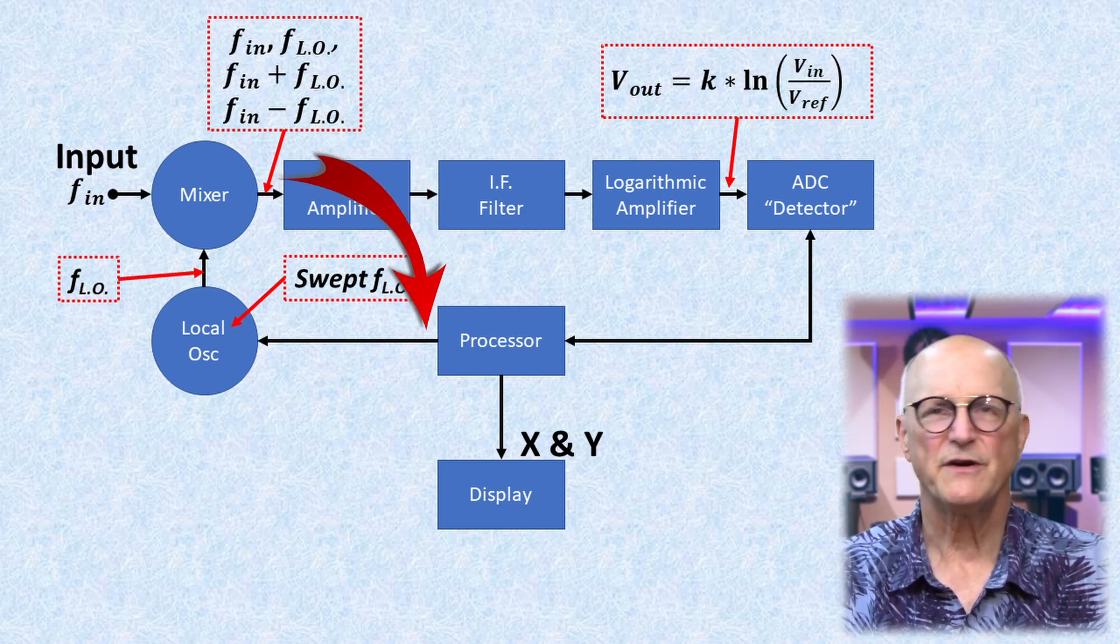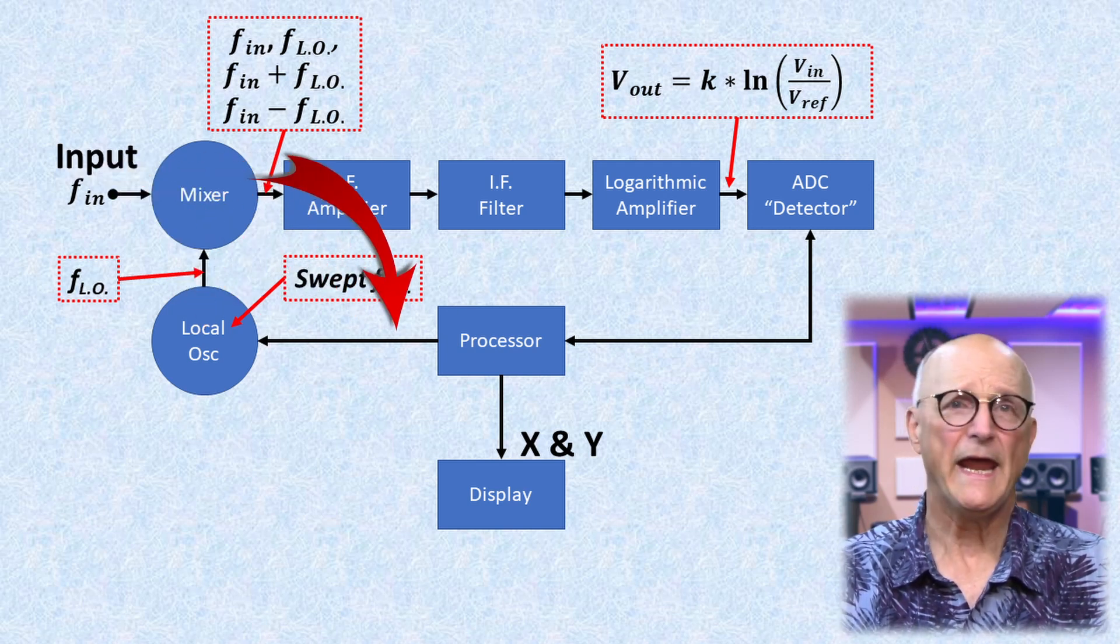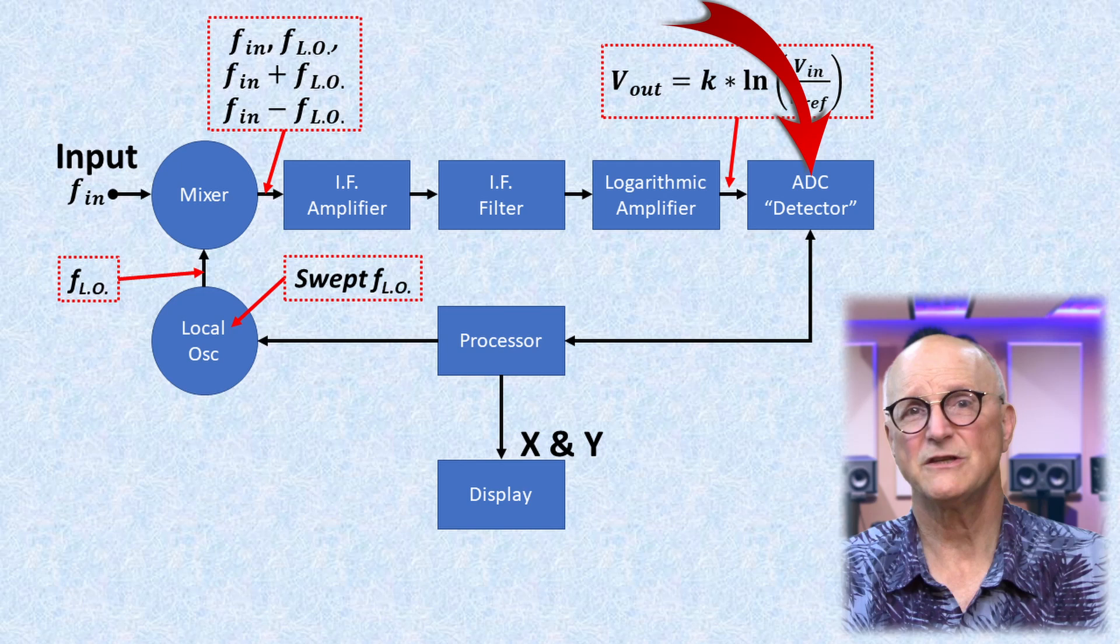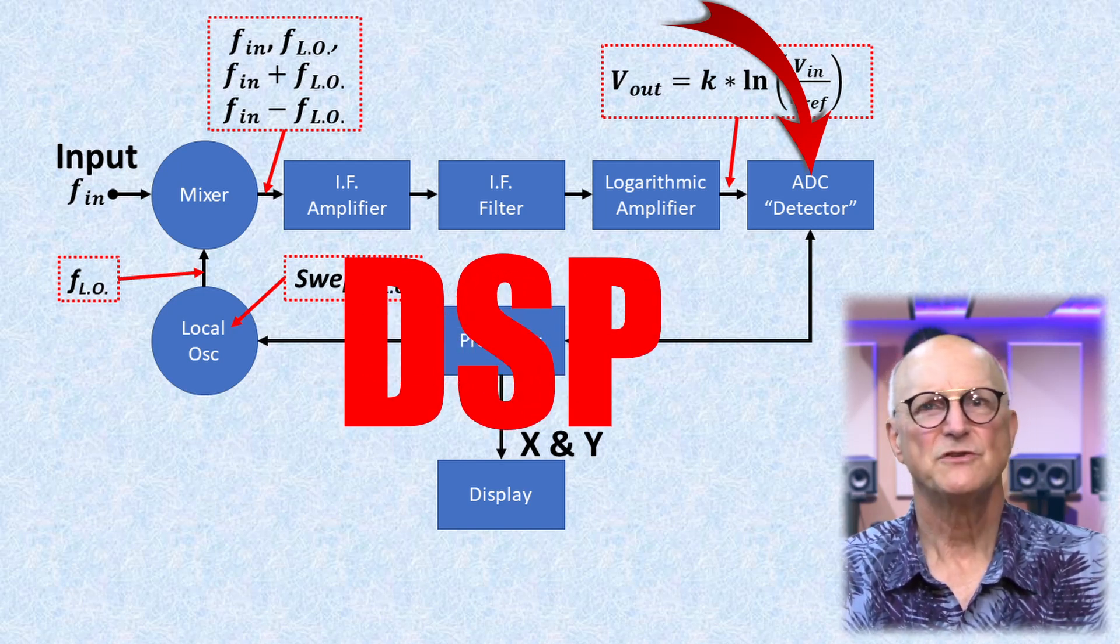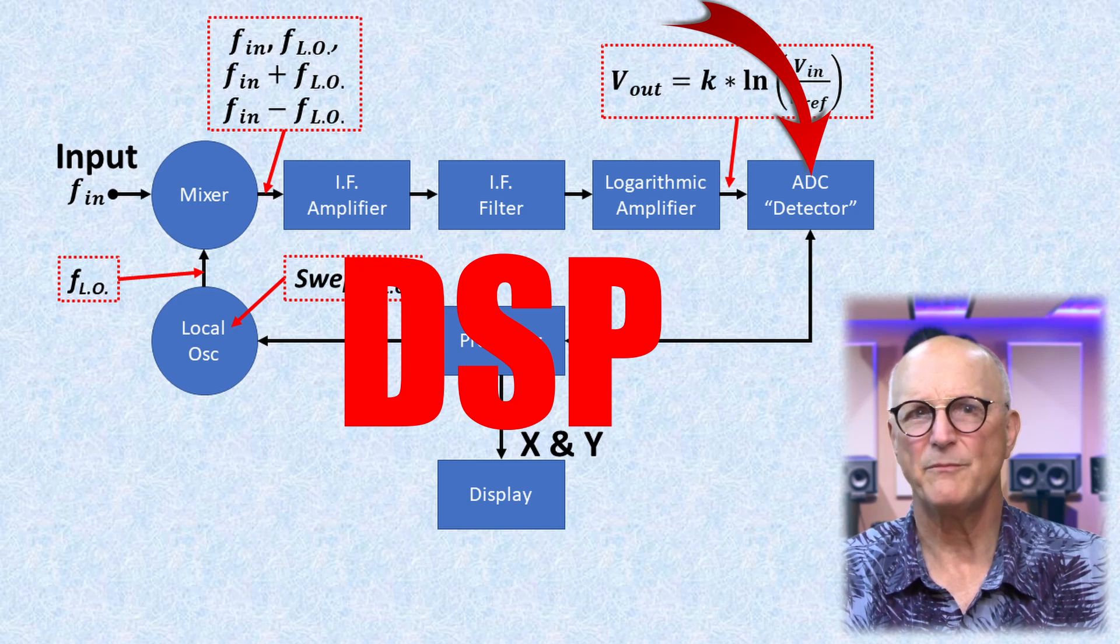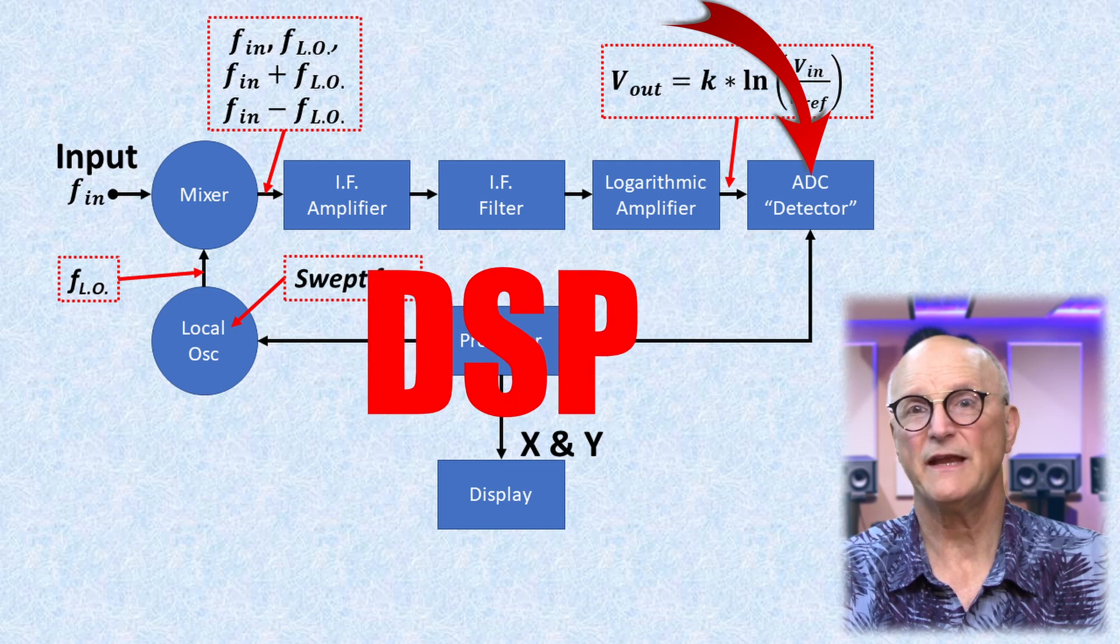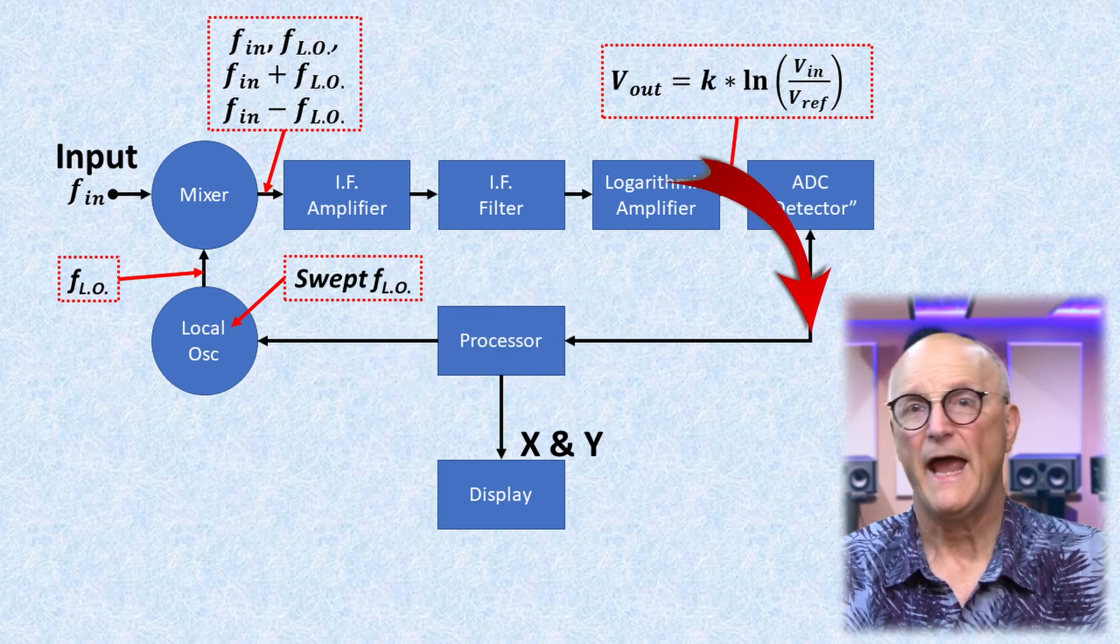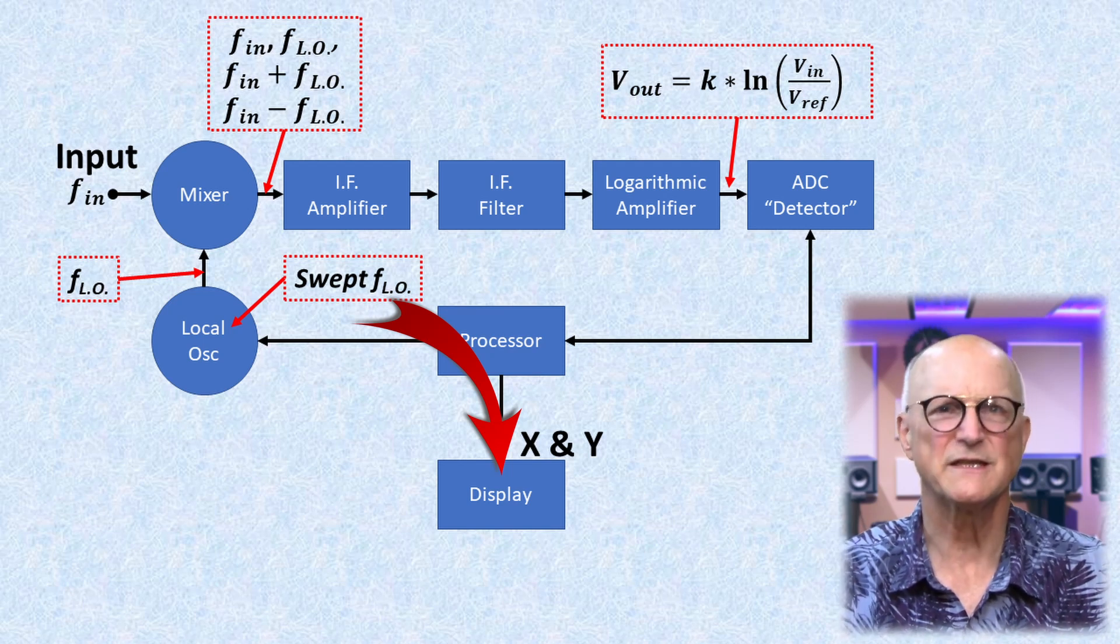It also has digital signal processing capability to apply video signal filtering using the samples it gets from the ADC. And finally, it has direct control over the display. The processor tells the local oscillator to go to a particular frequency, then tells the ADC detector to take a sample.